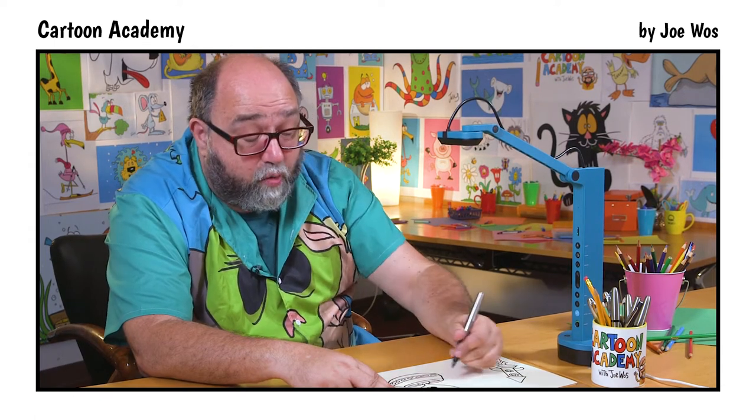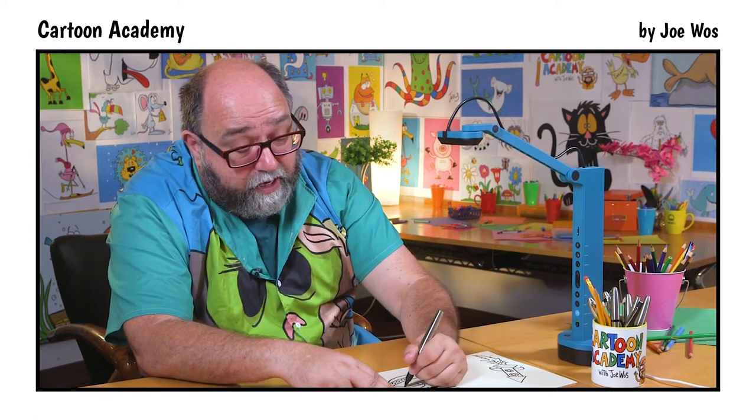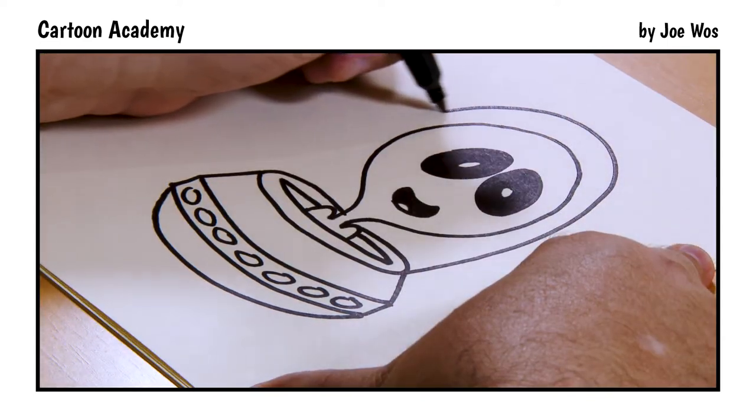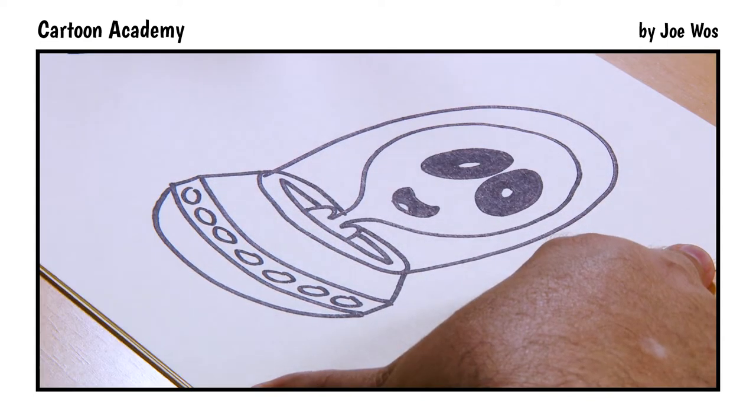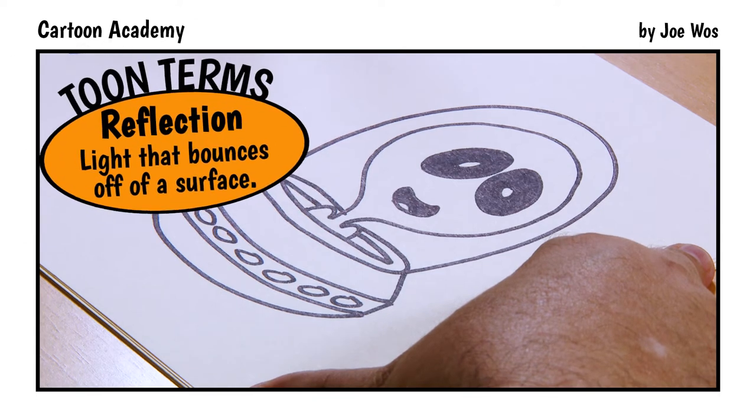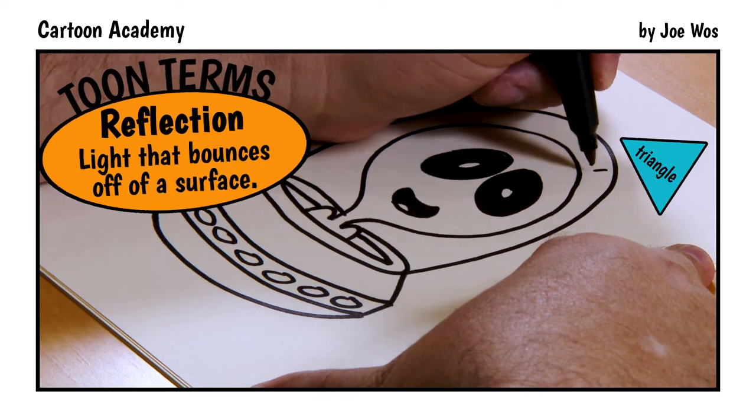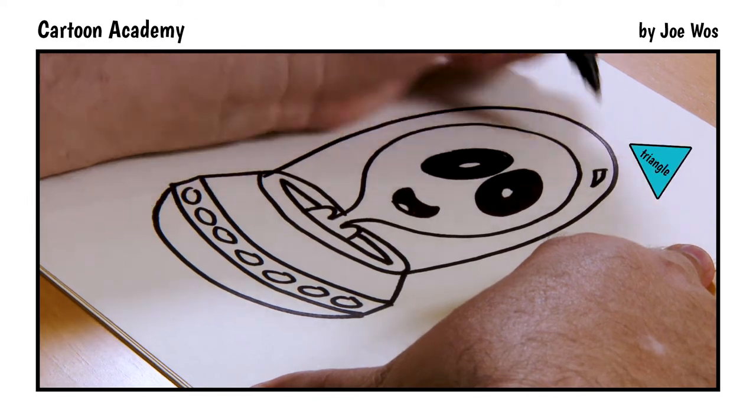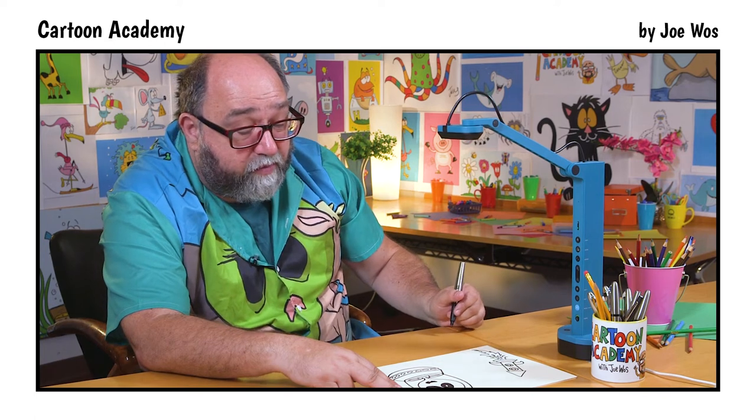Now we're going to add a dome. Starting right here, we come up, around, and down. There's a little bit of reflection in the glass. We just have a small triangle that we bend just a little bit to show that reflection.